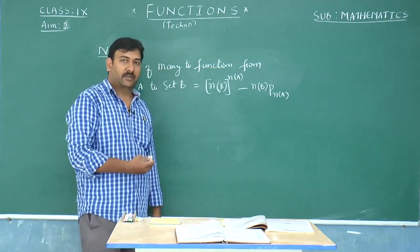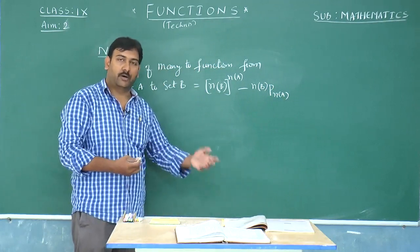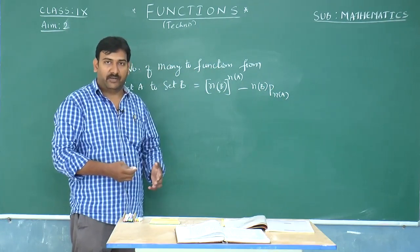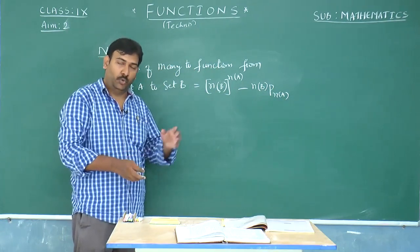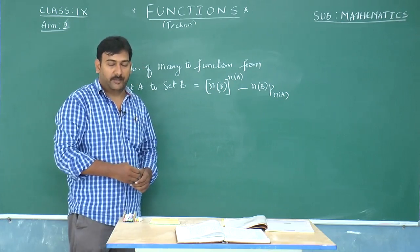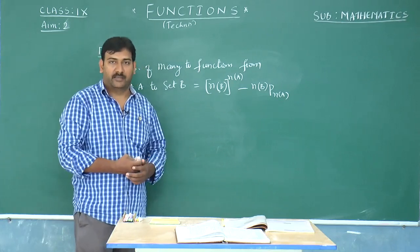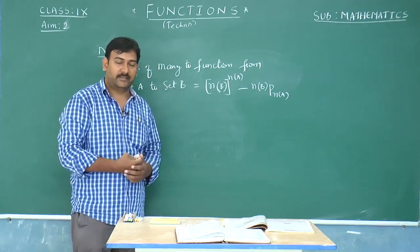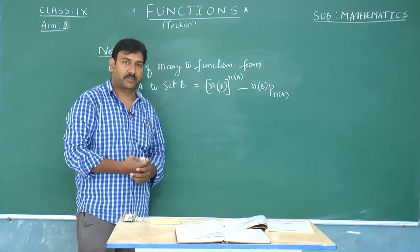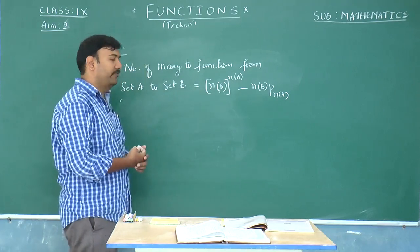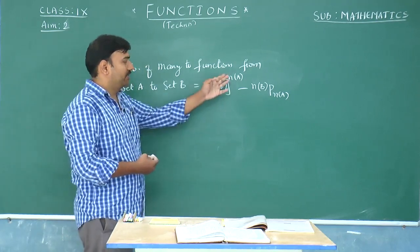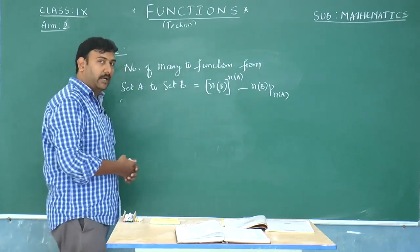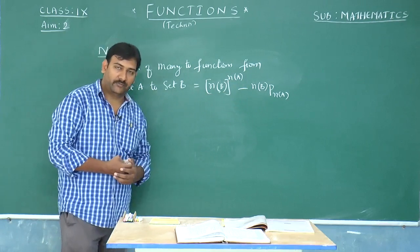A function must be either a one-to-one function or a many-to-one function. So when you add many-to-one functions and one-to-one functions you get the total number of functions. For example, if the total number of functions is 10 and one-to-one functions are 4, then the remaining 6 must be many-to-one functions. The total number of many-to-one functions is simply total functions minus one-to-one functions.